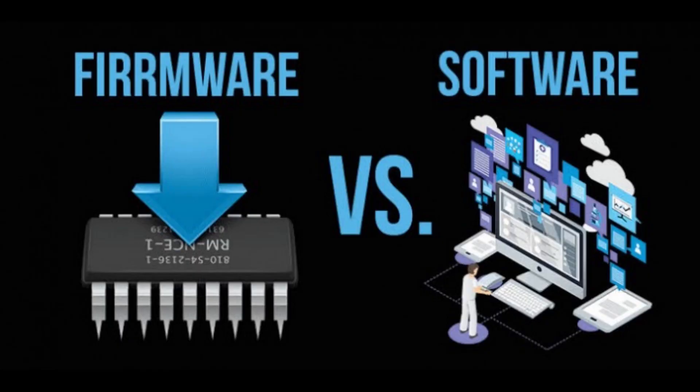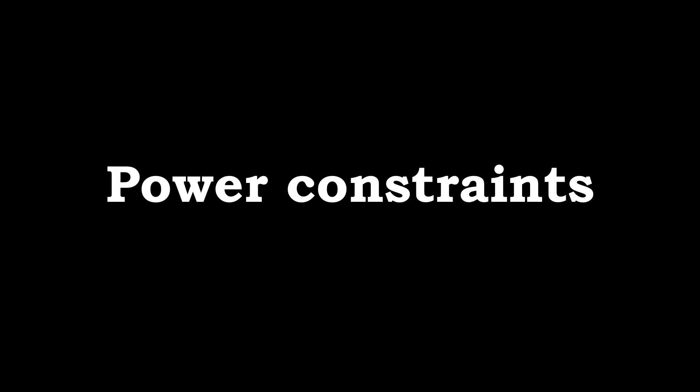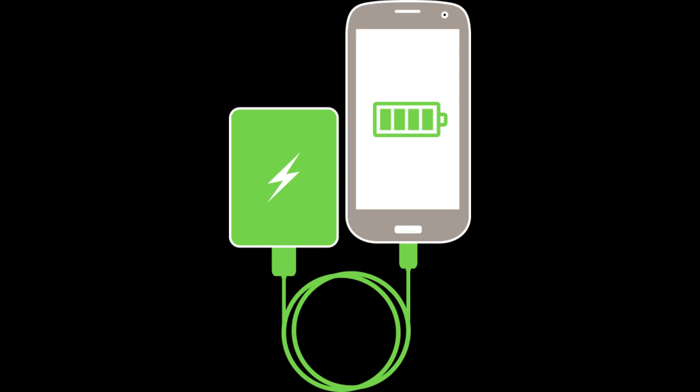Firmware and software: Embedded systems require software to control and manage hardware components. Firmware refers to software stored in non-volatile memory such as ROM or flash memory, responsible for initializing the system and providing low-level functionality. Embedded software runs on top of the firmware and implements the desired functionality. This software can be written in various programming languages like C, C++, and increasingly, the Rust programming language.